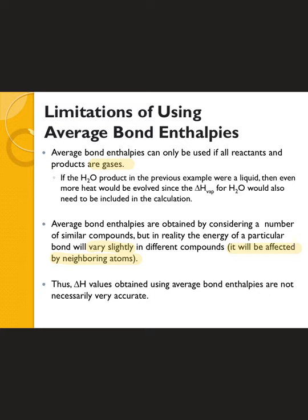There are two important limitations when using bond enthalpies to calculate reaction enthalpy. First, the reactants and products all need to be gases — everything needs to be in the gas phase for these values to be accurate. Second, we're assuming all molecules are created equal, but they're not. Neighboring atoms do affect bonds, so there might be slightly higher or lower enthalpy depending on the surrounding parts of the molecule. No two C–C bonds are necessarily identical unless surrounded by exactly the same atoms.